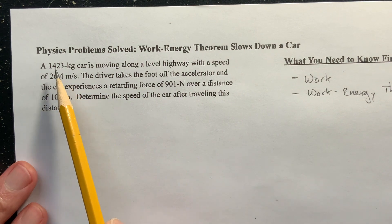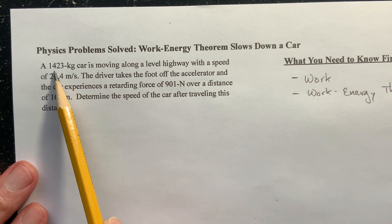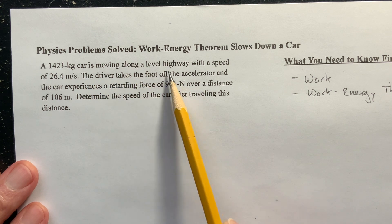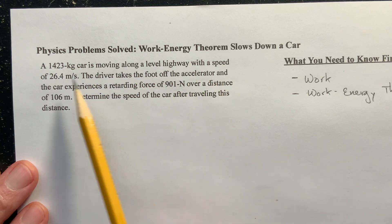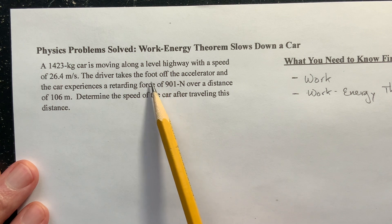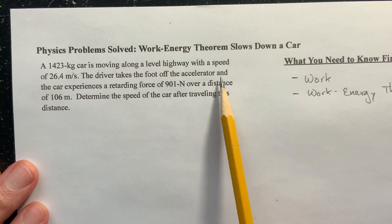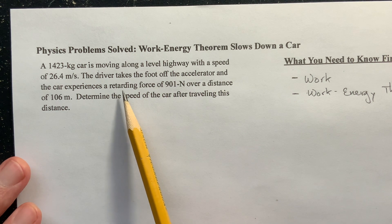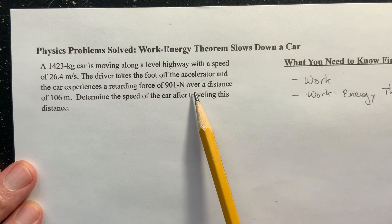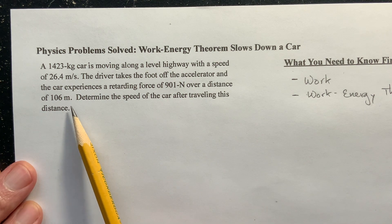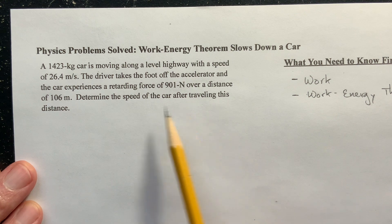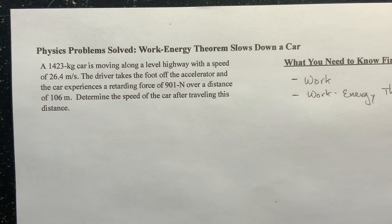So here we go. We have a 1423 kilogram car and it's moving along a level highway with a speed of 26.4 meters per second. The driver takes the foot off the accelerator and the car experiences a retarding force of 901 newtons over a distance of 106 meters. Determine the speed of the car after traveling this distance.